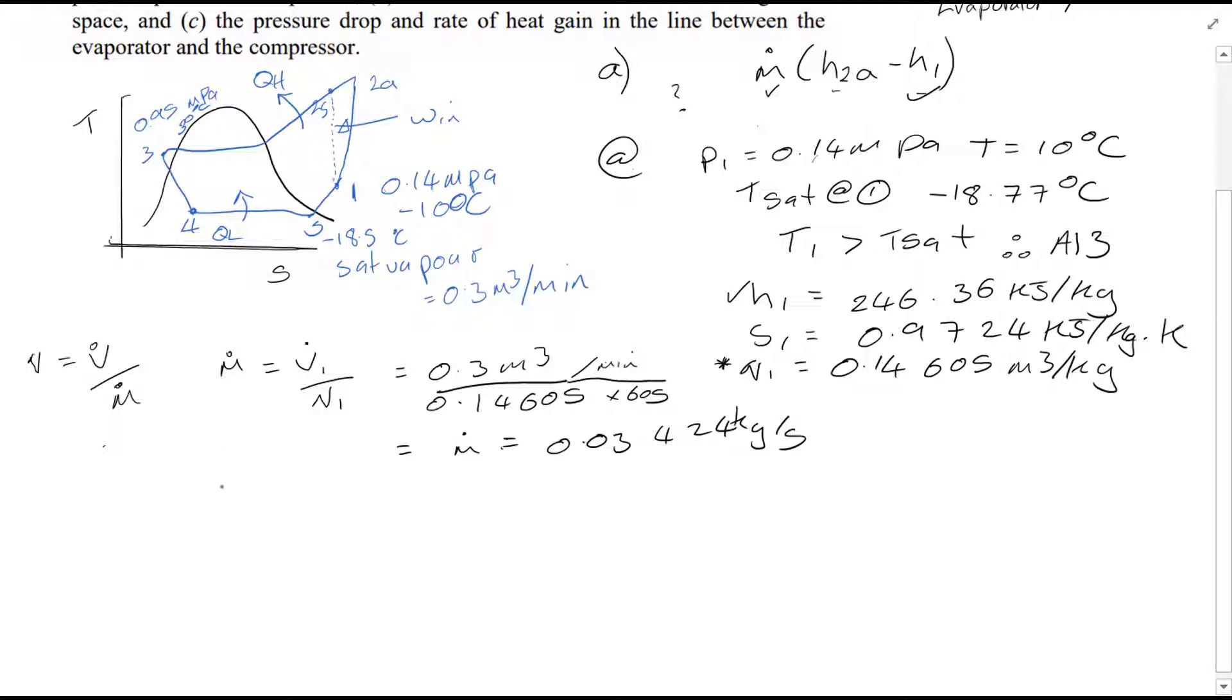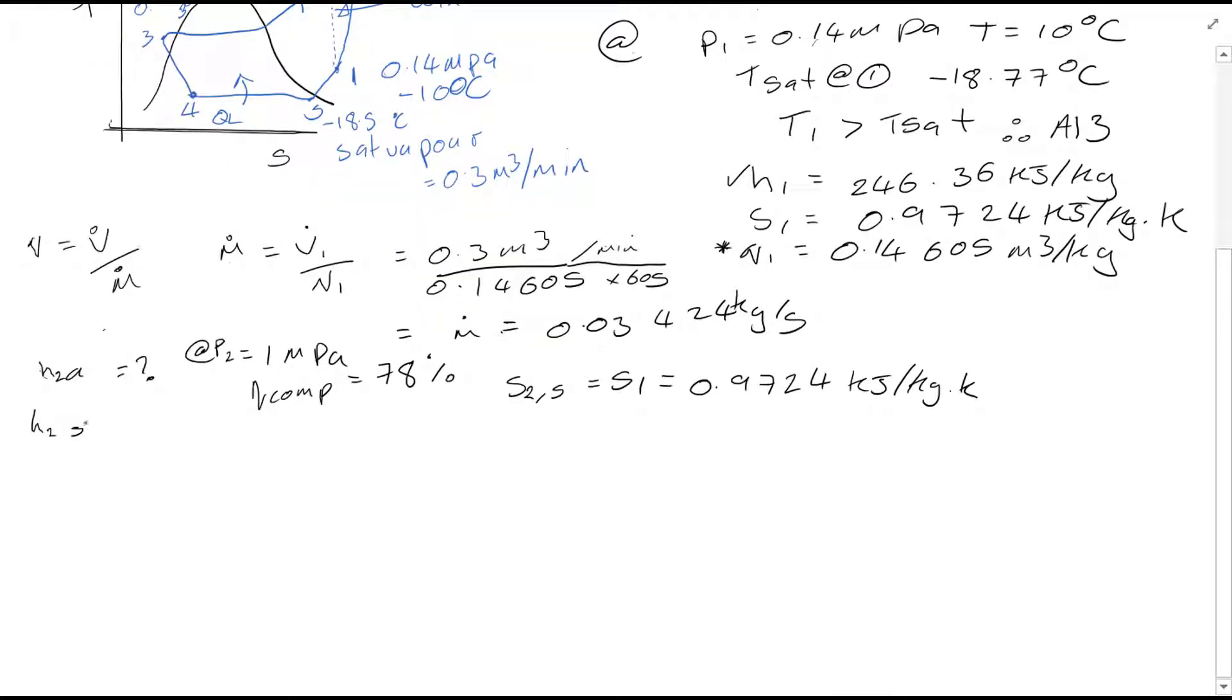So we're just interested now in finding the value of H₂. We know at point 2 pressure is 1 MPa, and the isentropic efficiency of the compressor is equal to 78%. We know that S₂S is equal to S₁ for isentropic, and hence, therefore, it's equal to 0.9724 kJ per kg Kelvin.